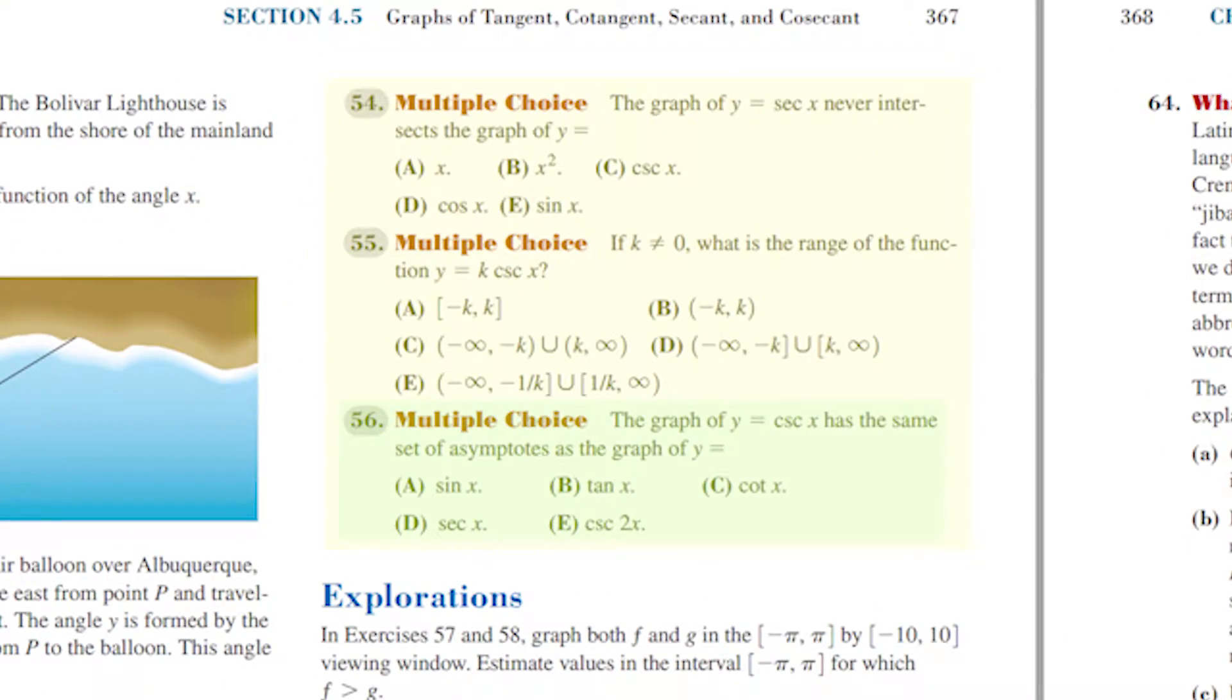Or like here in 56 we don't mention usually at school that cosecant and cotangent have the same set of asymptotes since these two are just not so strongly related. But it is true and here students have to visualize all six trigonometric functions and this is exactly the purpose of home revision.